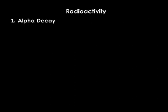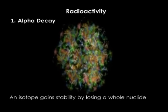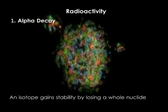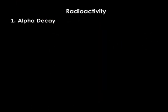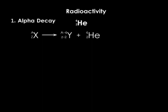Alpha decay occurs when an unstable isotope gains stability by losing a whole nuclide. An alpha particle is basically a helium nucleus, represented as shown here. So if a nuclide decays by release of an alpha particle, the mass number decreases by 4 and the atomic number by 2. So if a parent nuclide X with mass number A and atomic number Z undergoes alpha decay, we shall have a daughter nuclide Y with mass number A minus 4 and atomic number Z minus 2, plus an alpha particle, which is essentially a helium nucleus.